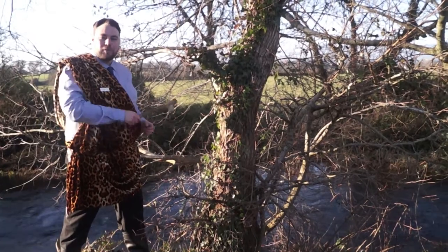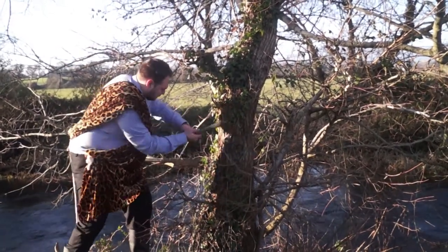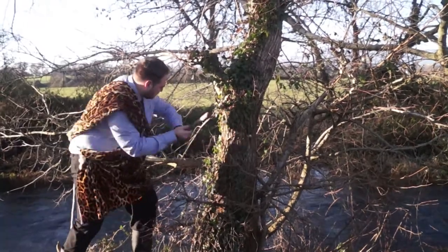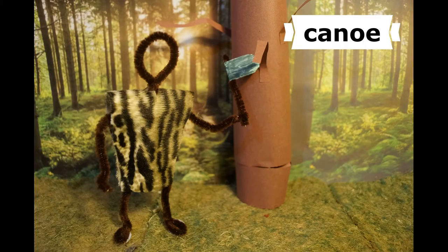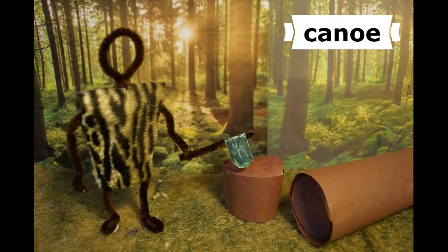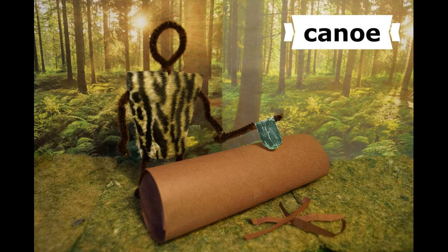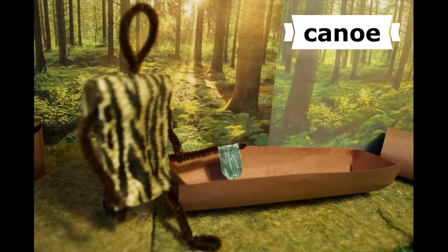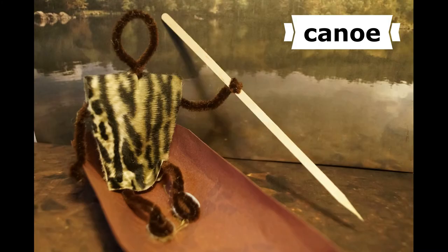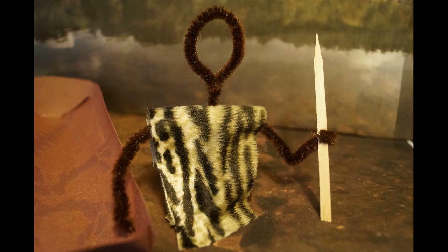Build your very own Stone Age dugout canoe. Step one: find a nice thick tree trunk. Step two: chop it down using your axe. Step three: strip off all those pesky branches. Step four: cut the tree trunk in half. Step five: hollow out the tree trunk. Step six: enjoy your new canoe. Step seven: try not to fall in!